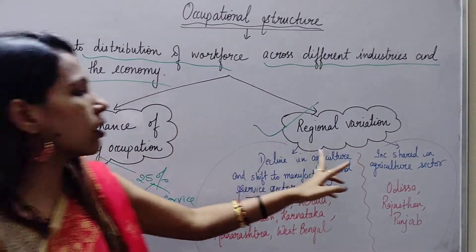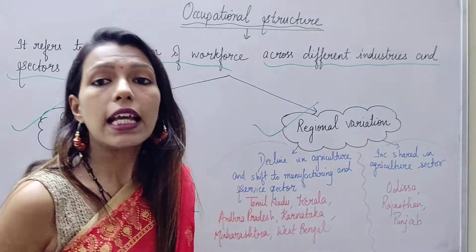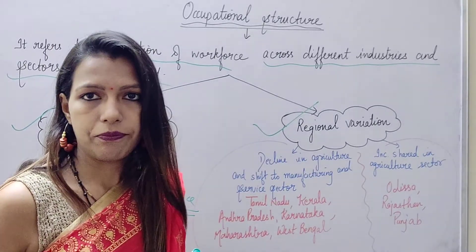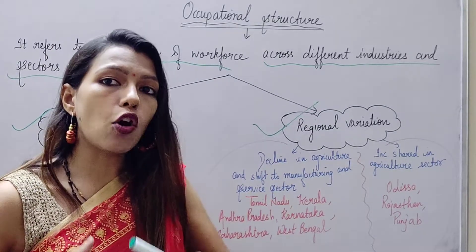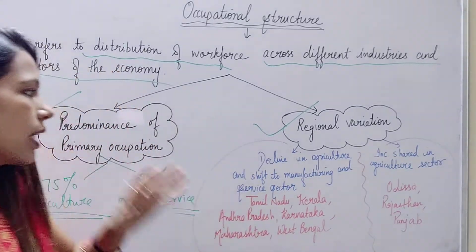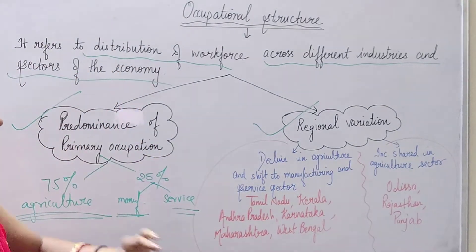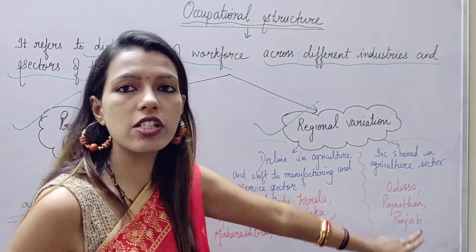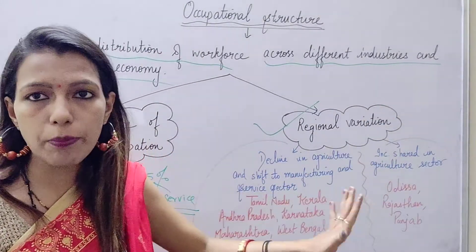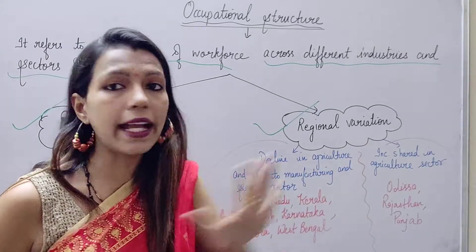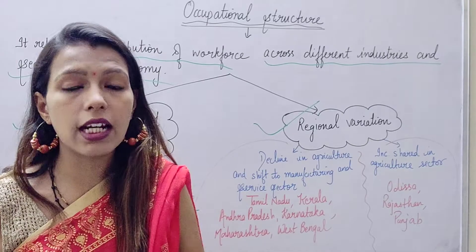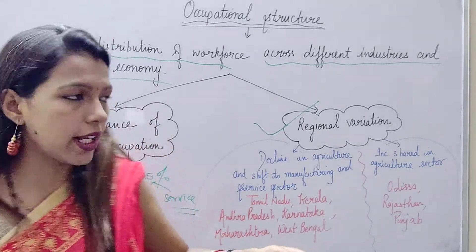Now let's talk about Regional Variation. It means that the distribution of the workforce was different according to the different states of the country. For example, states like Odisha, Rajasthan, and Punjab had the majority of the population in the agriculture sector. You have to learn the names of these states and mention them in your exam.